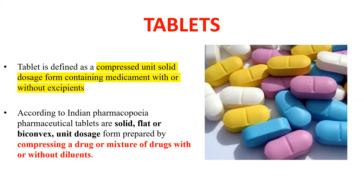In the definition, pharmaceutical tablets are solid, flat or biconvex unit dosage form prepared by compressing a drug or mixture of drugs with or without diluents. Diluents or another mixture of drugs are compressed to prepare the solid dosage form in flat or biconvex shape.